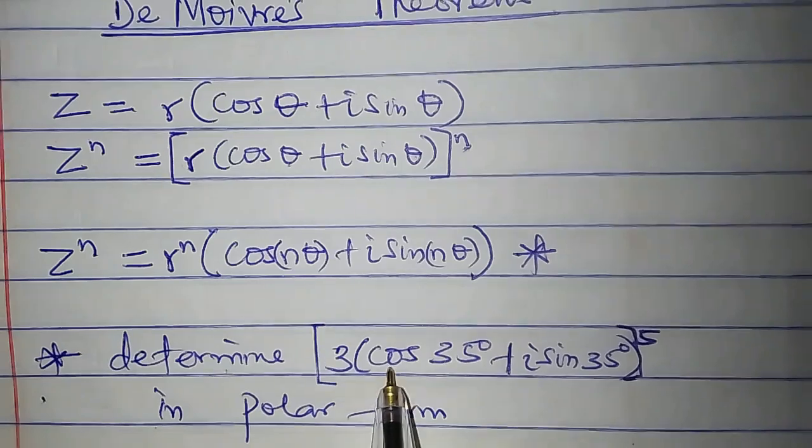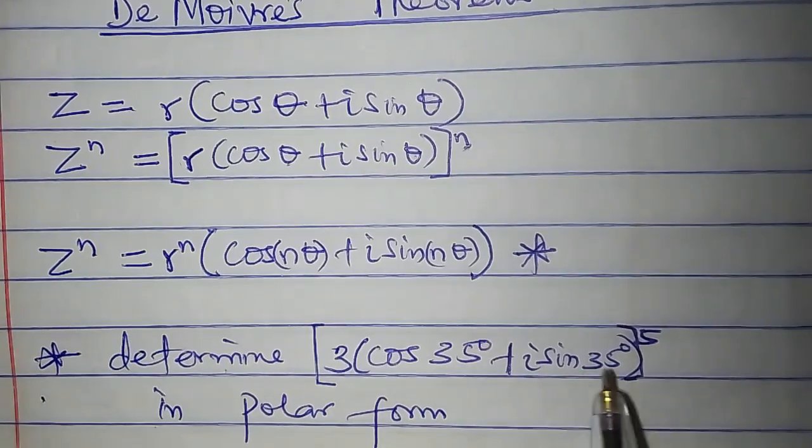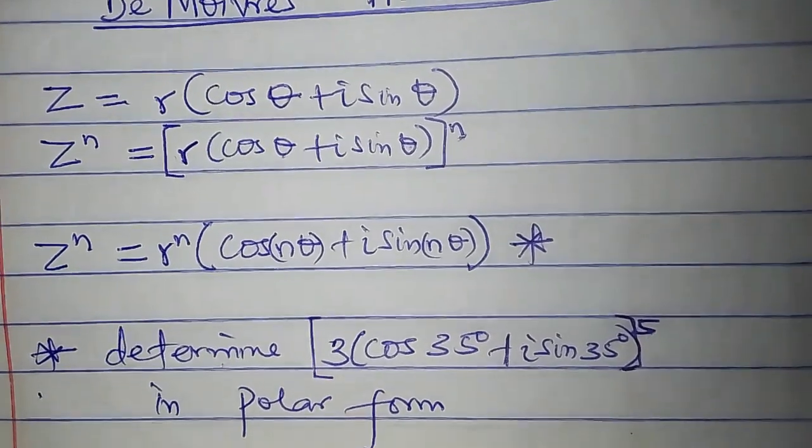I want to determine [3 cos 35 degrees plus i sine 35 degrees] all to the power of 5 in polar form.